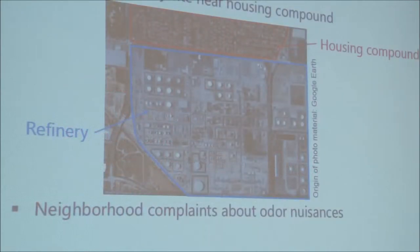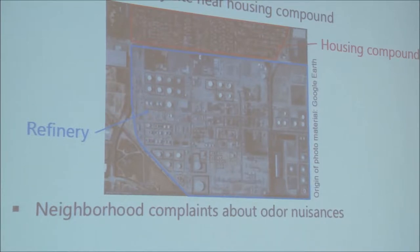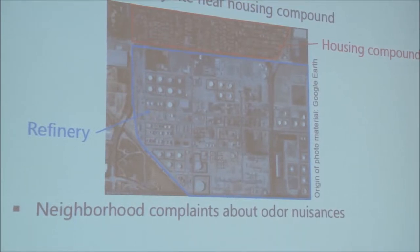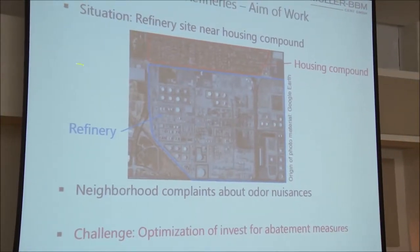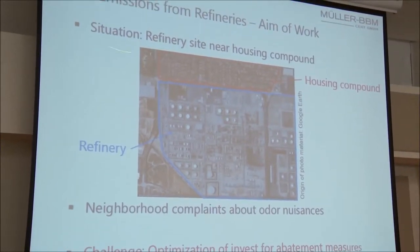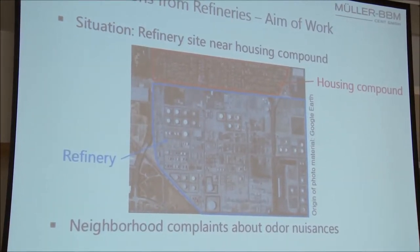What is the aim of work? Refinery sites often have a history that reaches back to the early 20th century and therefore they are often located very close to housing compounds. You can see this, for example, at the Torrance refinery in California where there is a very densely populated area just across the street from the refinery site.